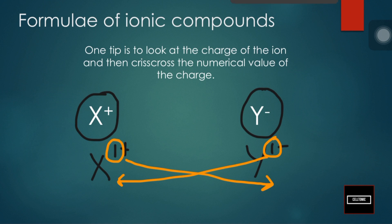What do we get? We get X1Y1. But since the value is 1, we can remove it. So what we are left with is XY — this particular ionic compound is the XY compound.